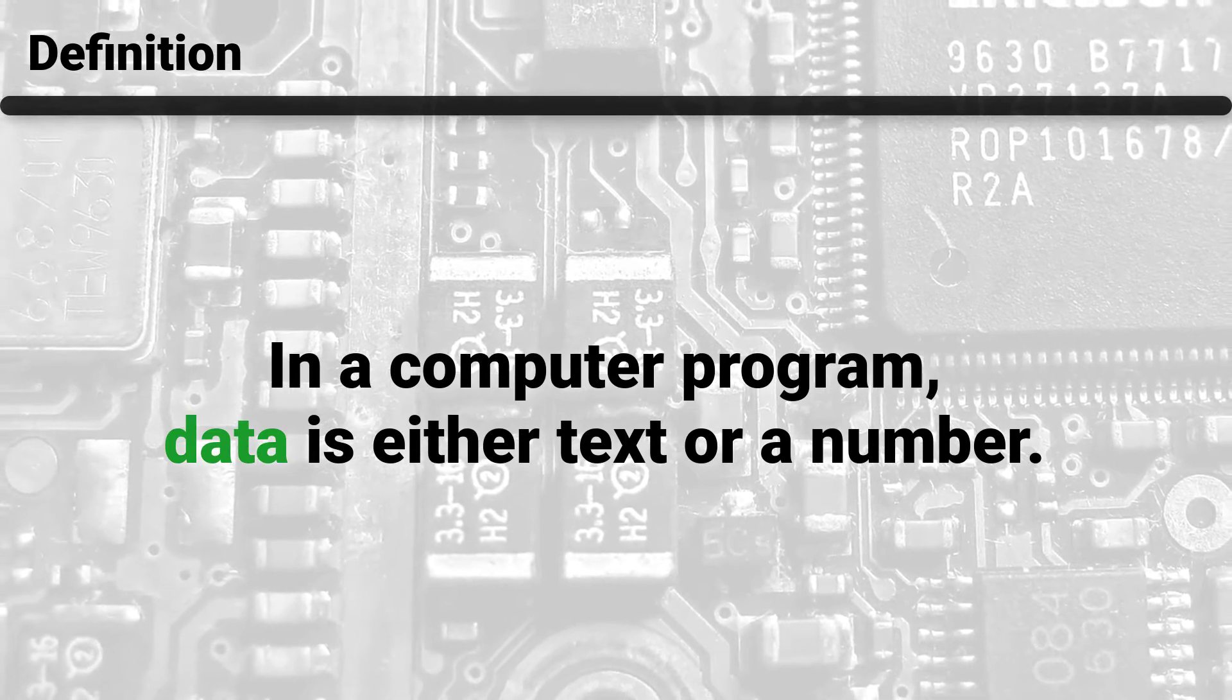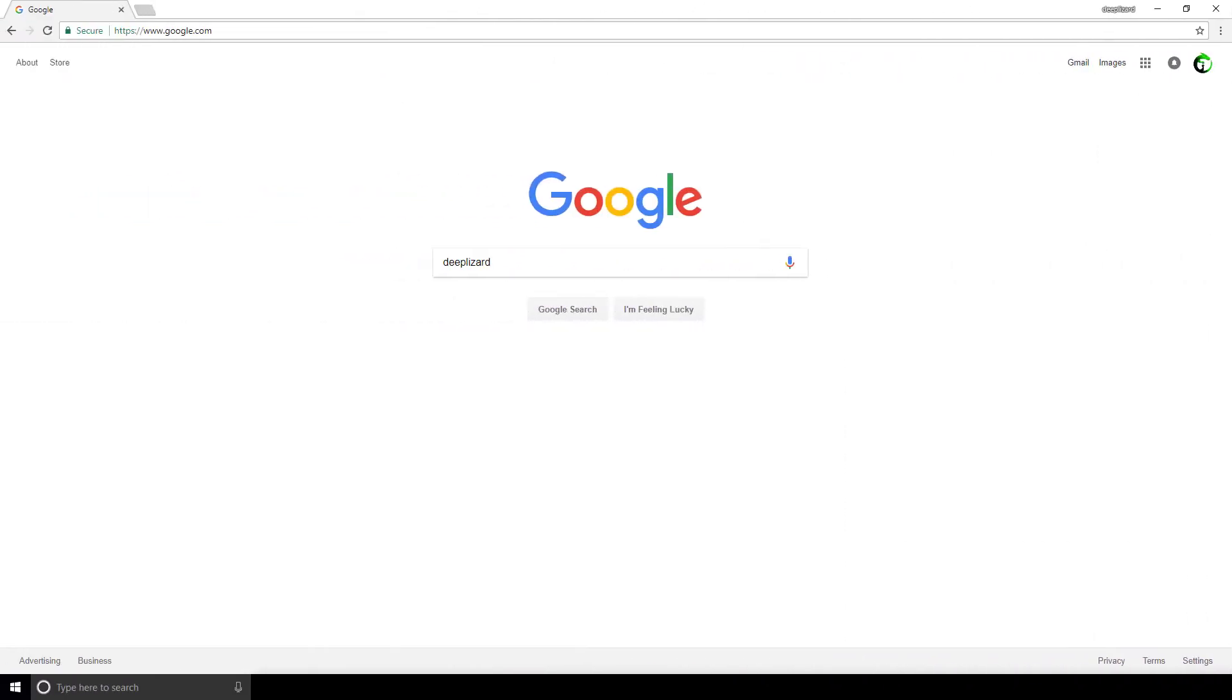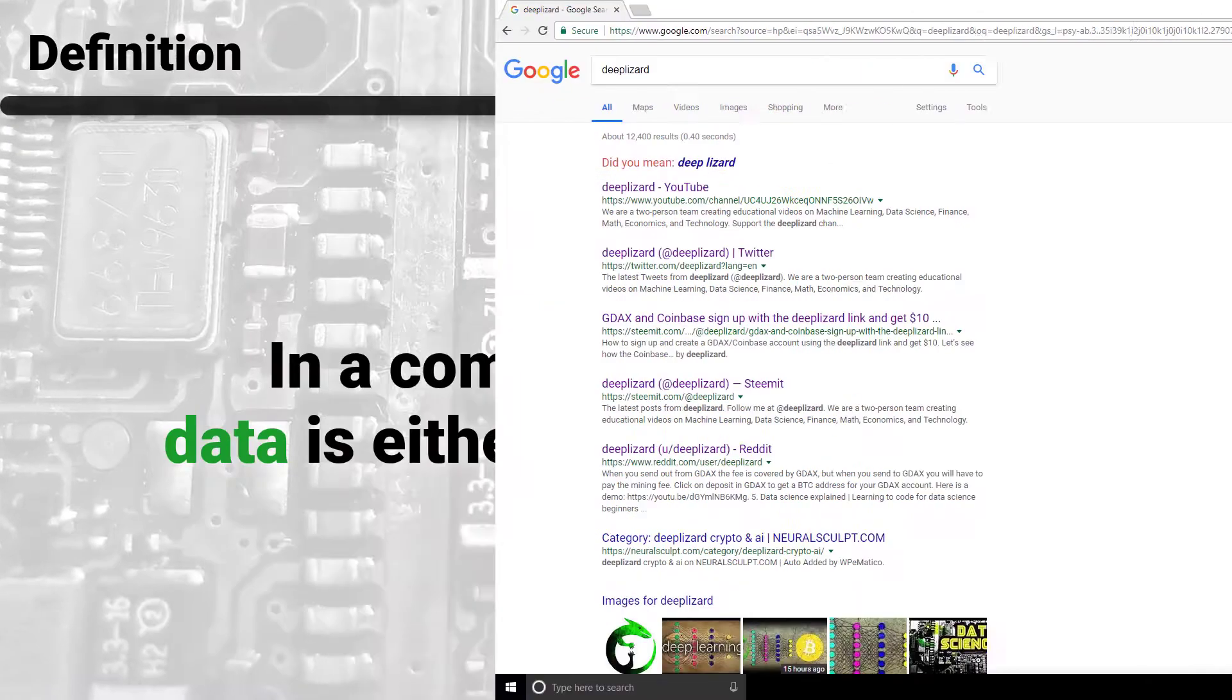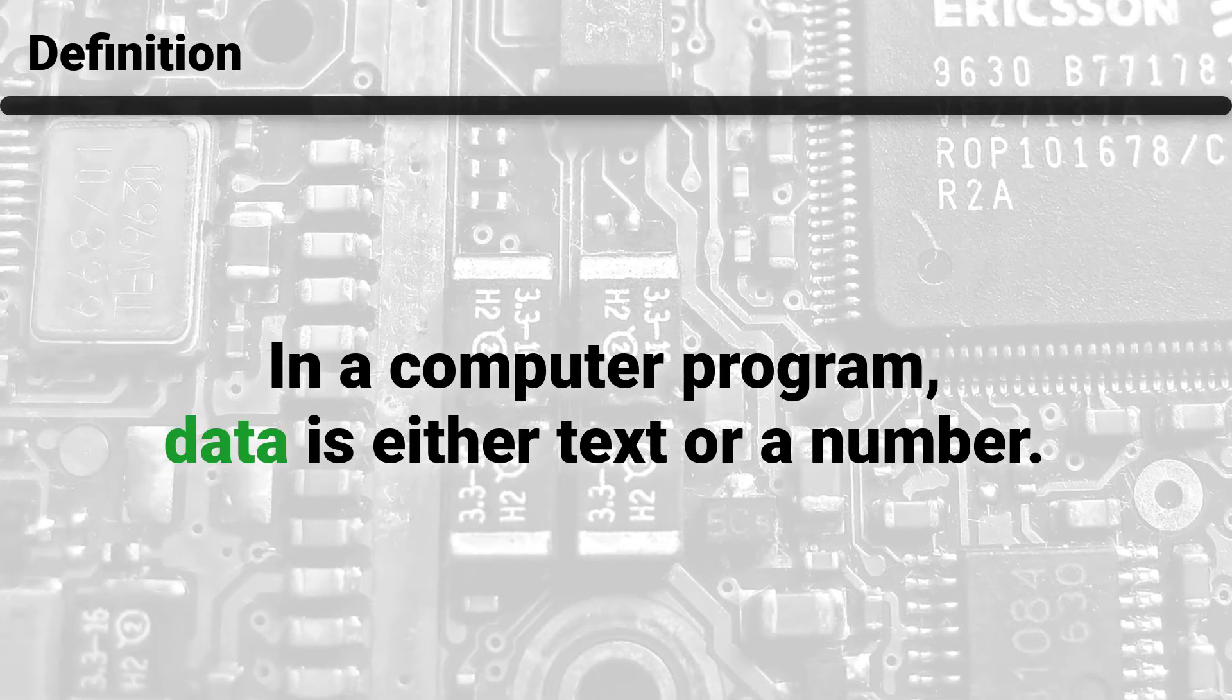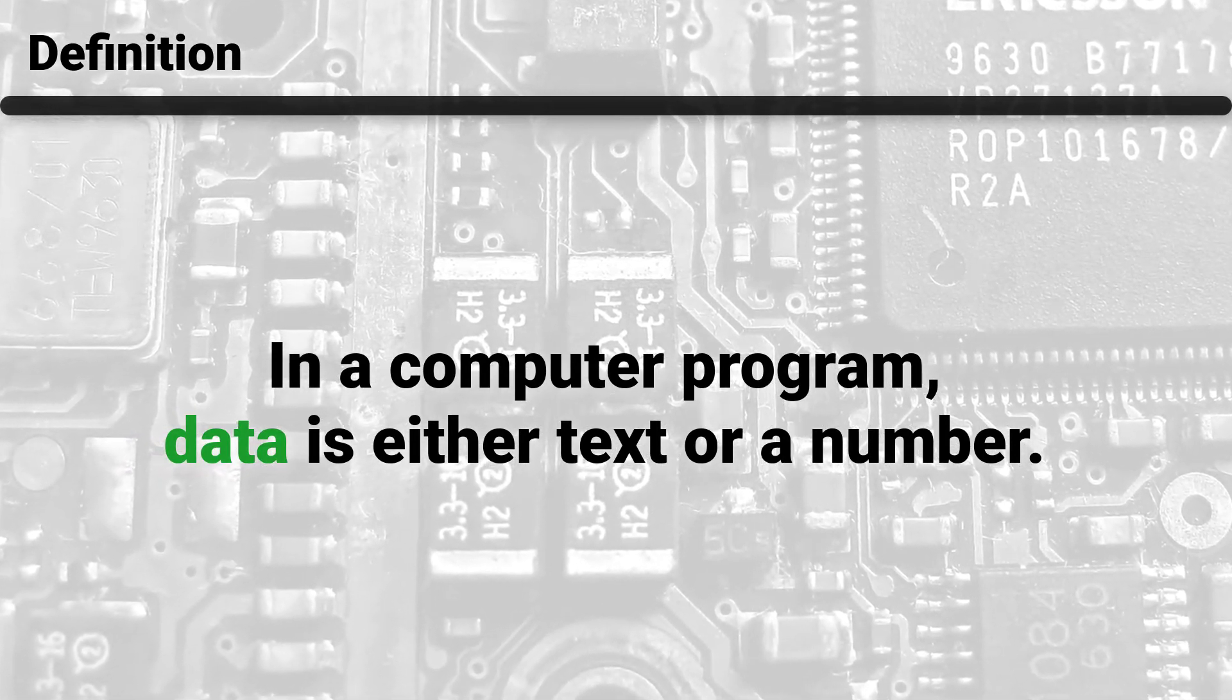Let's look at an example that you're probably familiar with. This program is called Google search and it needs data to do its task. The data Google needs is text, so we'll put in the text deep lizard and click enter. We get back more text all about deep lizard. This is an example of a computer doing data. We put in text and we get out more text. Even though this is just text, it's powerful because of what the text represents. The text represents something in the real world, in this case websites.